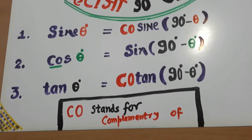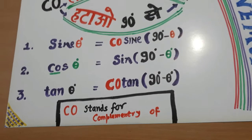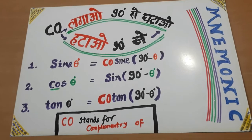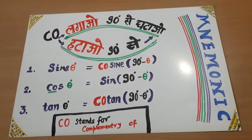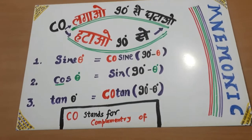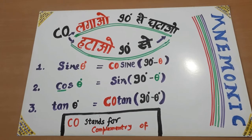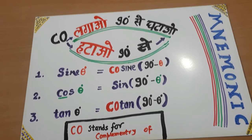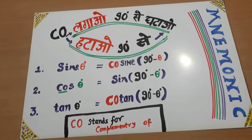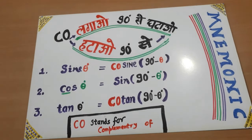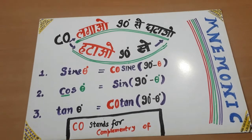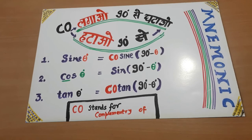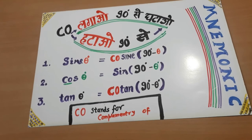So, 'ko' stands for complementary. This is what I wanted to tell you today — that many questions can be solved if this mnemonic is remembered and applied. This is very, very simple. Thank you very much. Go on viewing my videos. Bye.